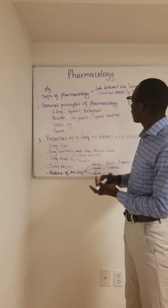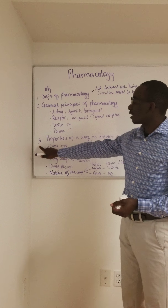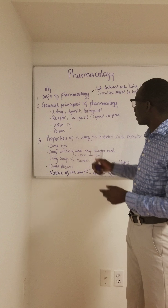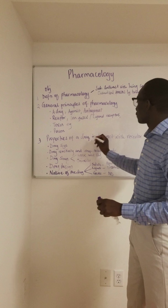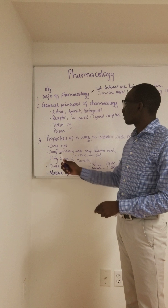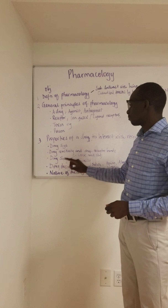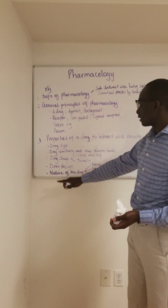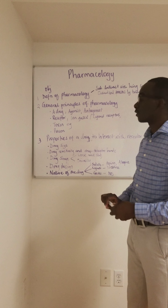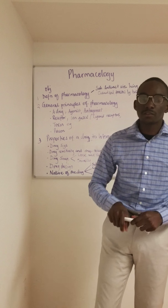We shall also look at toxins and poisons. In our third objective we shall look at the properties of a drug to interact with a receptor — under this we shall look at the drug size, drug reactivity and drug-receptor bonds, drug shape, and drug design, and lastly the nature of the drug.